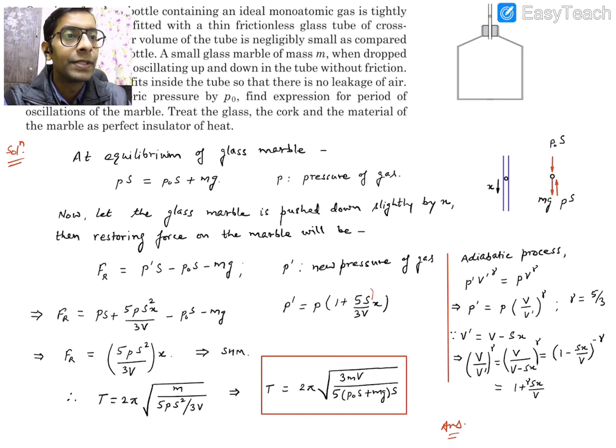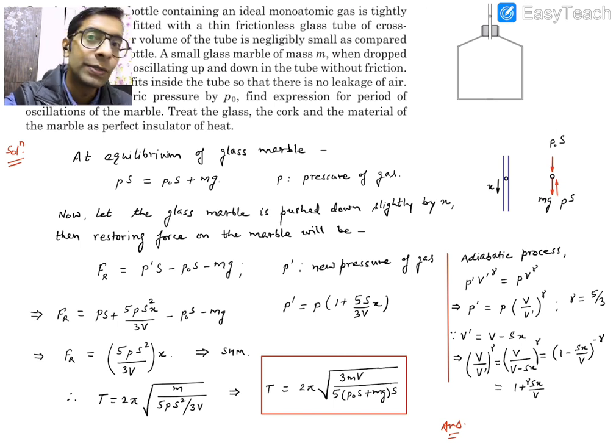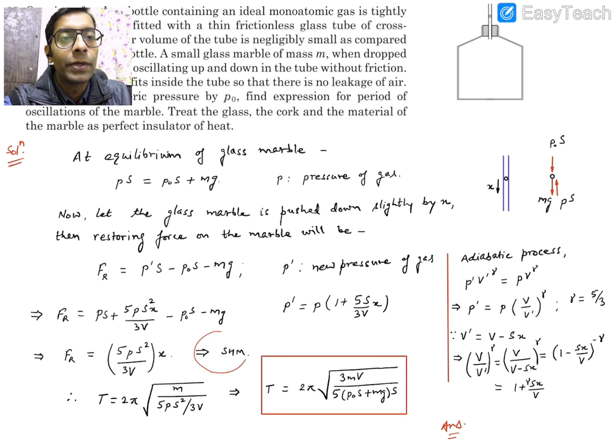So this term will become just multiplied by capital S. So first term will be PS. Second term will be 5PS²x divided by 3V. And then there will be these two terms coming in as such. If you look carefully then this PS is combination of these two terms. That means PS is combination of these two terms, so this will get cancelled out. Ultimately we are going to get it as restoring force which is 5PS² divided by 3V into x. Now we got that this restoring force is directly proportional to x, which is the condition for simple harmonic motion.